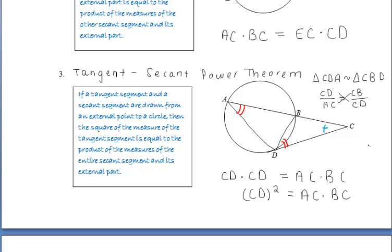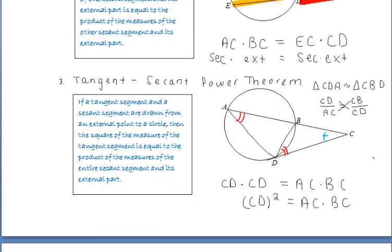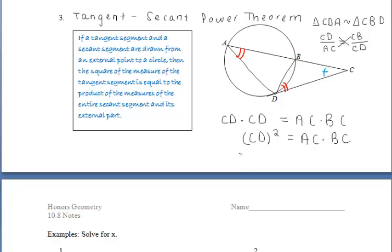To help remember the secant-secant power theorem, think of it as: secant times the external part equals secant times the external part. For the tangent-secant power theorem, take the tangent and multiply it by itself — tangent squared — and that must equal the secant segment times its external part.